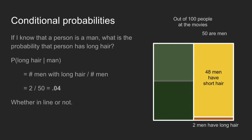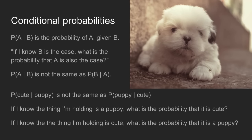The probability that someone has long hair given they're a man is 4%. So conditional probabilities: if I know that B is the case, what's the probability that A is also the case? You can't reverse B and A and have this remain true. For instance, if I know that the thing I'm holding is a puppy, what's the probability it's cute? Very high. If I know the thing I'm holding is cute, what's the probability it's a puppy?